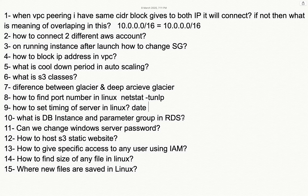What is a DB instance parameter group in RDS? When we create an EC2 machine and install a database on it, there is a file called /etc/my.cnf which lets us modify multiple database parameters. However, when using RDS-managed MySQL, we do not have direct access to that file. The parameter group is the option in RDS which allows us to modify those database parameters.